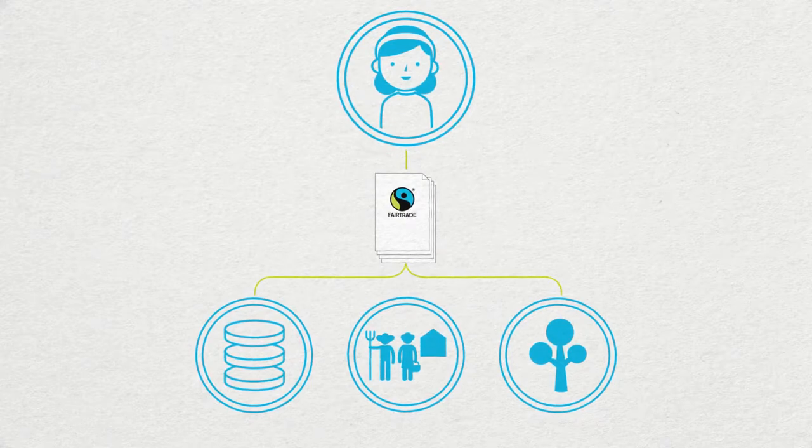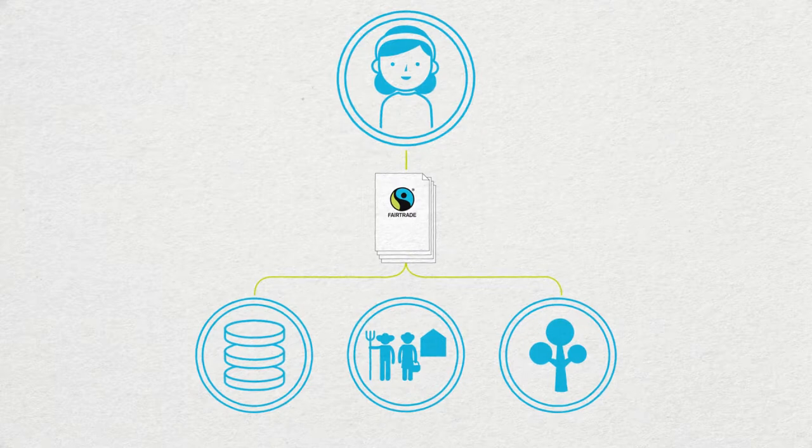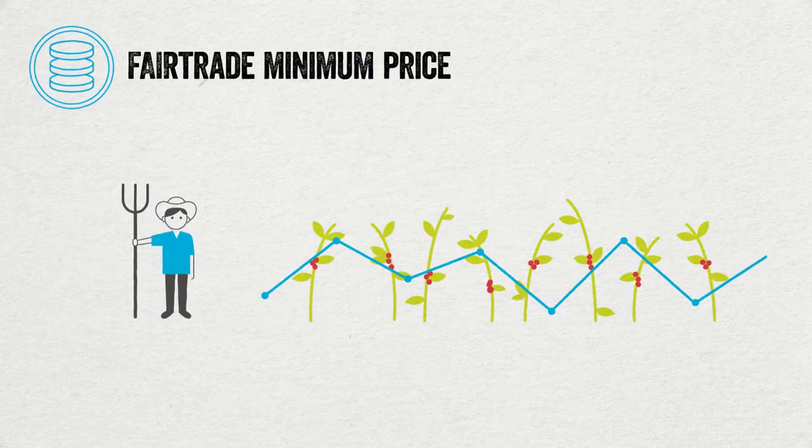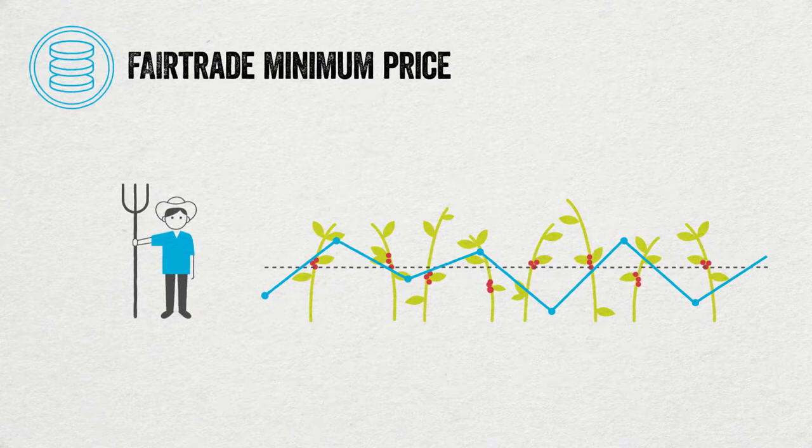Rosa's cooperative earns the Fairtrade minimum price when they sell their coffee on Fairtrade terms. The Fairtrade minimum price aims to at least cover the average costs of sustainable production. It acts as a safety net when global market prices fall.